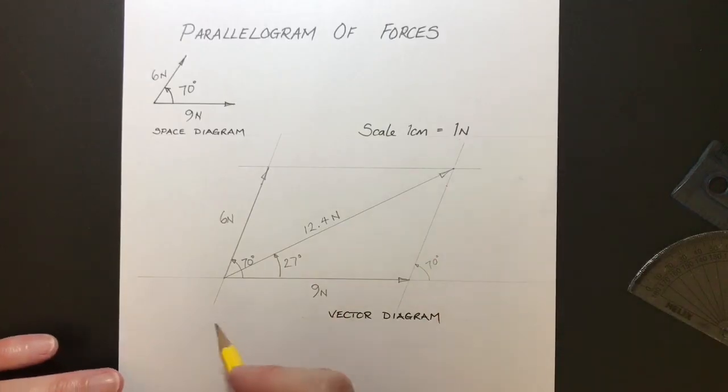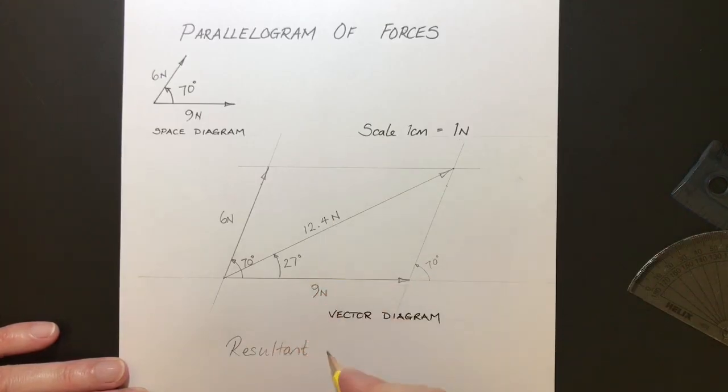And that's it. Here we go. So our resultant is 12.4 Newtons. And it's at an angle of 27 degrees.